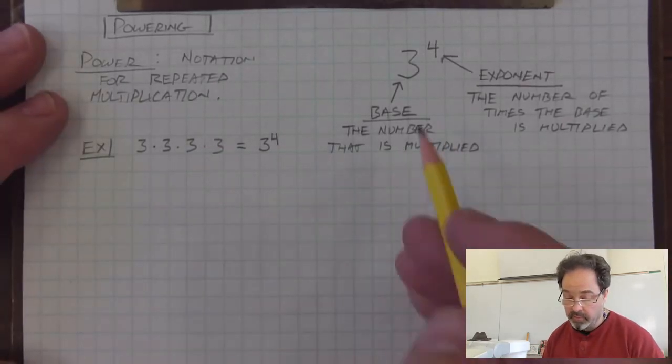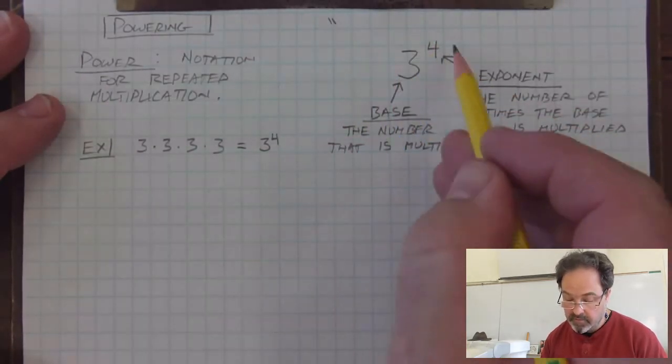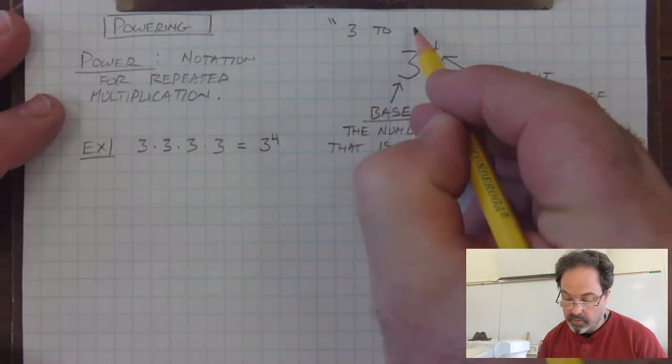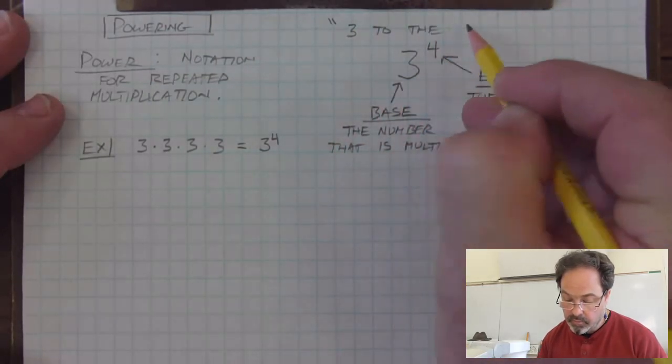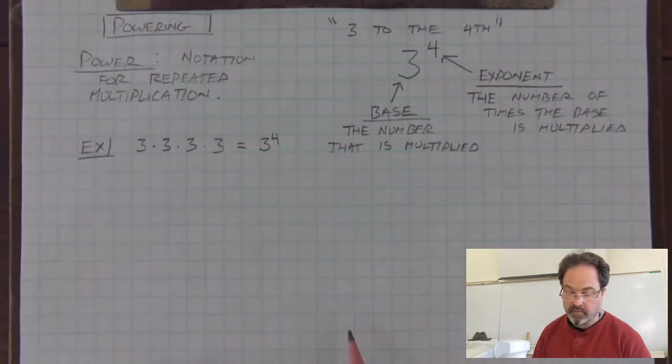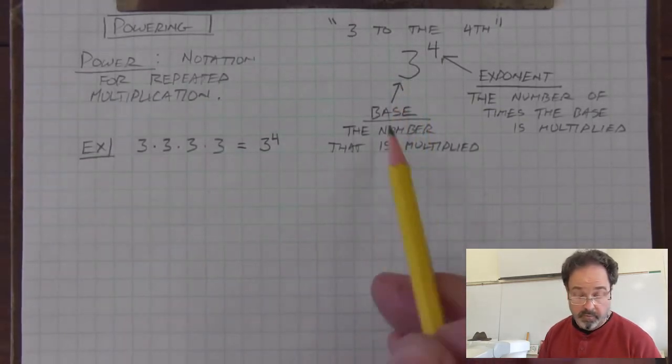We could read this power. If we were to see this on a paper, we could say that this is 3 to the 4th. And sometimes we include the word raised, 3 raised to the 4th power.